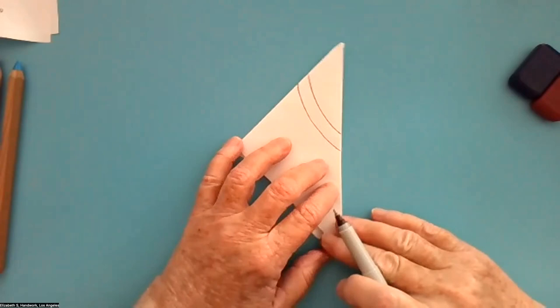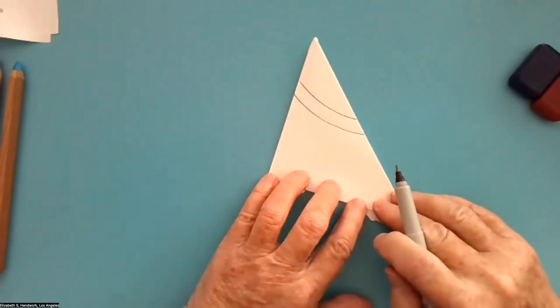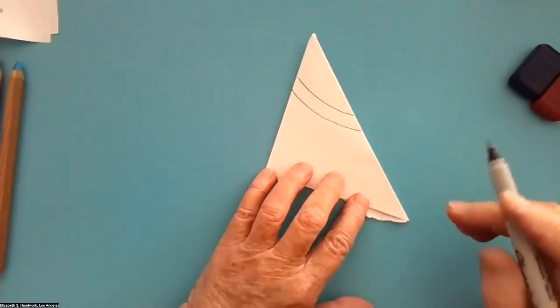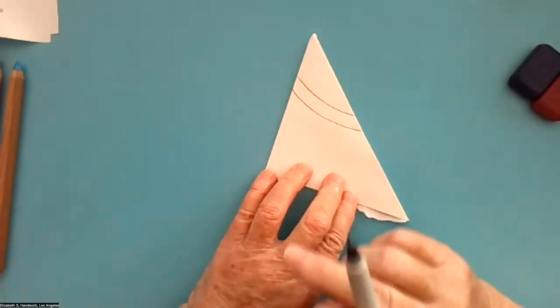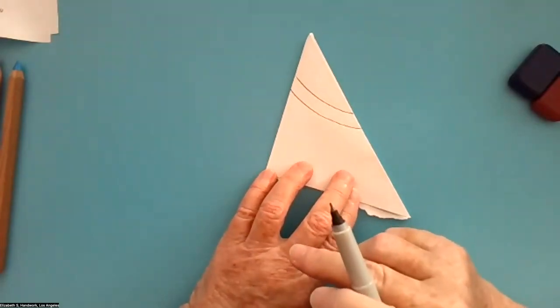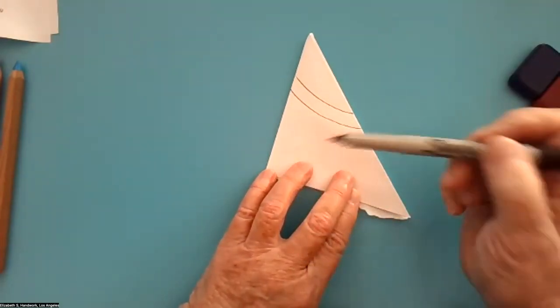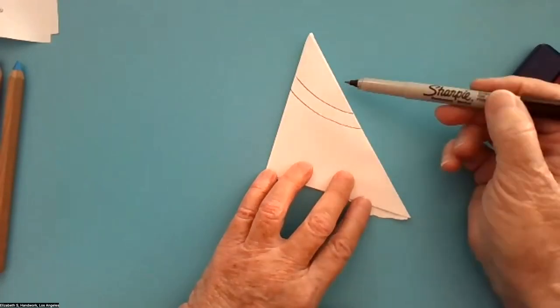And now I'm going to crisscross it. And I think I might do straight lines. Again, straight, curved, doesn't matter. But what are the rules? Two rules. Think about them yourself first. What are the two rules? Fold to fold and crisscross.